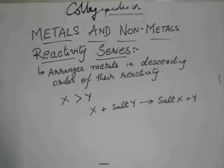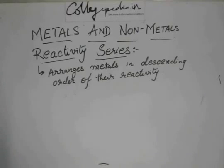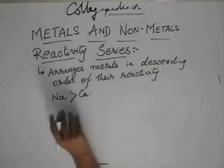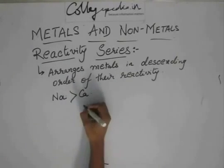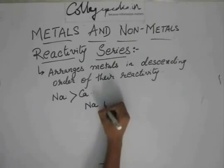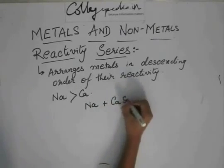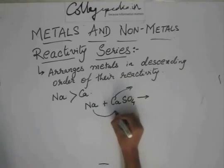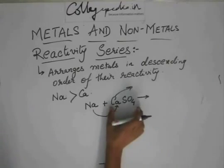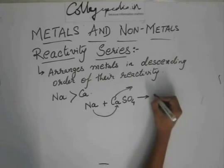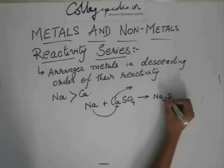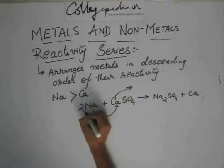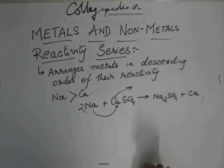That means now, in this reactivity series, sodium is higher than calcium. So what it means is that sodium, if it reacts with a calcium salt like calcium sulfate, it will knock out this calcium and take the place in the salt. That is, it will become sodium sulfate, and you will get calcium. And the balanced reaction will be this.